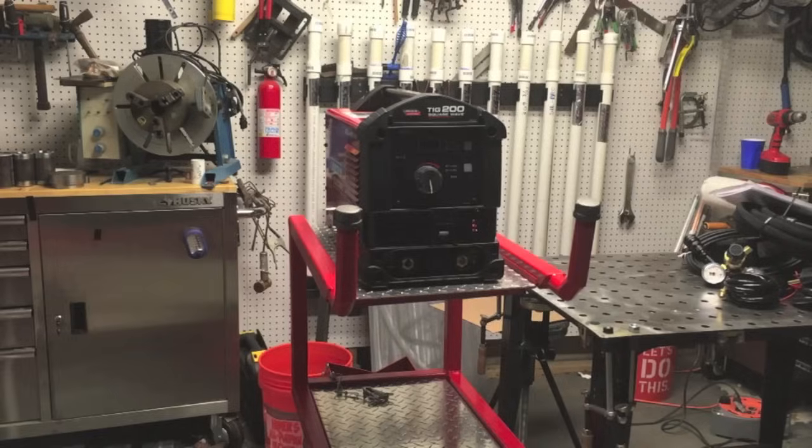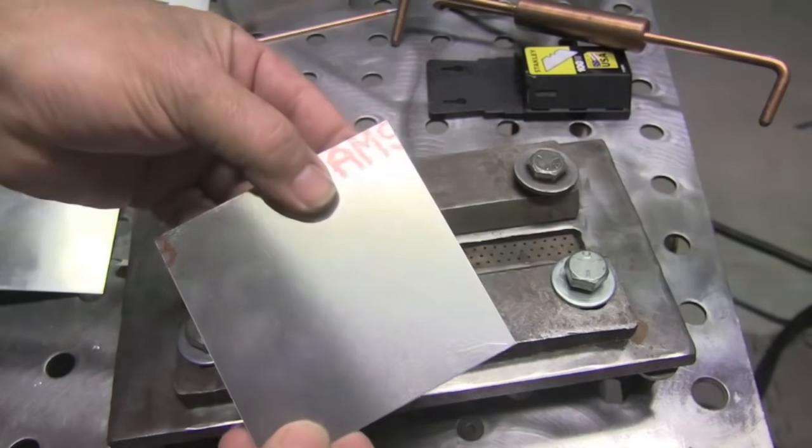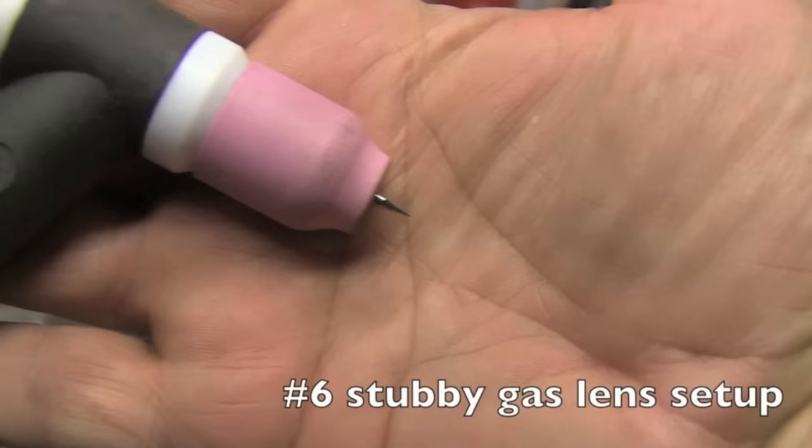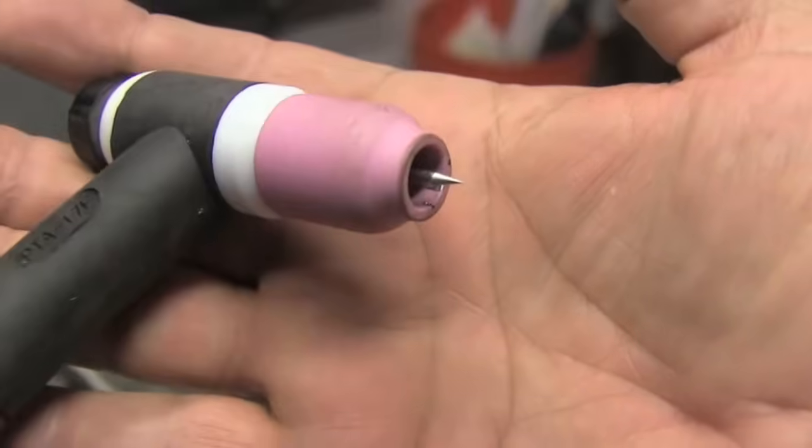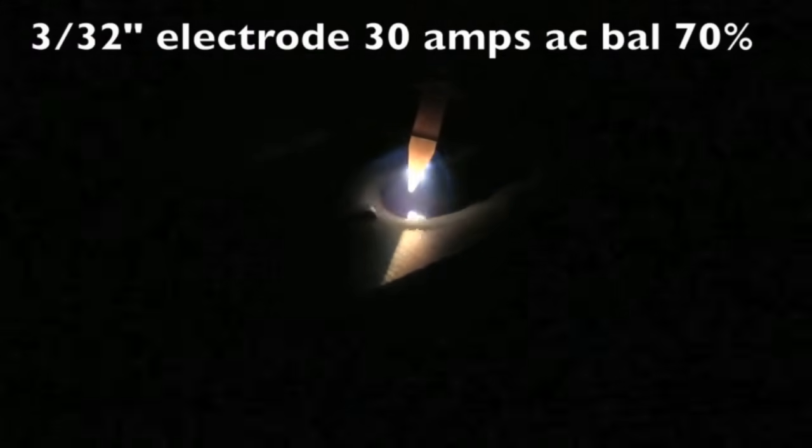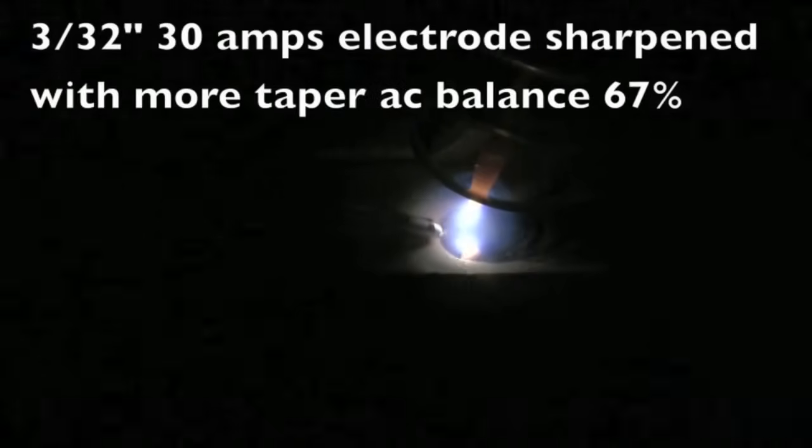First up, 30 thousandths thick 6061 aluminum—that's about 0.8 millimeters thick. I'm going to be using a really sharp electrode for this thin stuff in a number six stubby gas lens setup. At really low amperage you can get some arc wandering even with a sharp electrode.